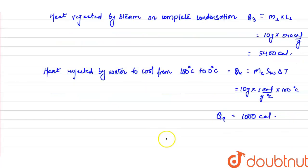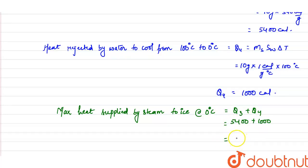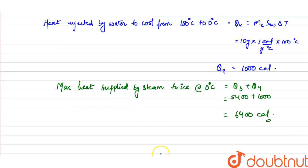The maximum heat supplied by the steam to the ice at 0°C is Q3 + Q4 = 5400 + 1000 = 6400 calories.